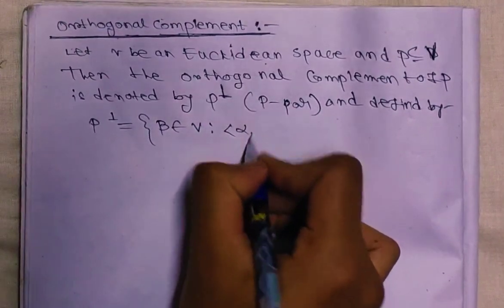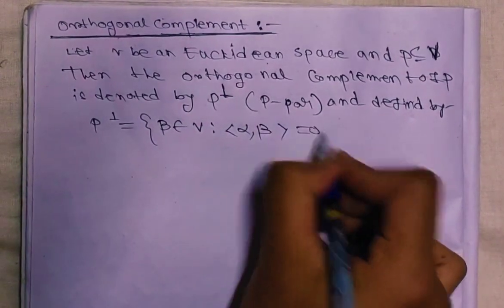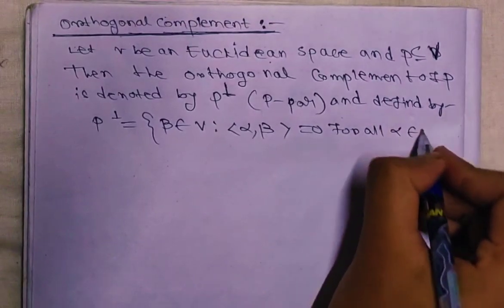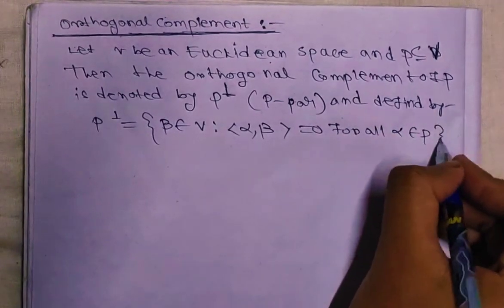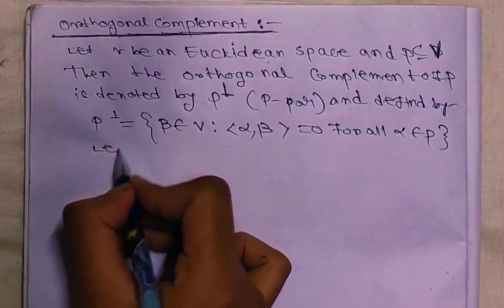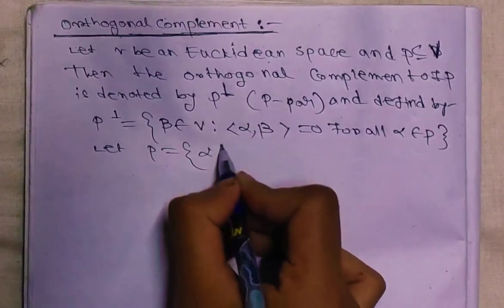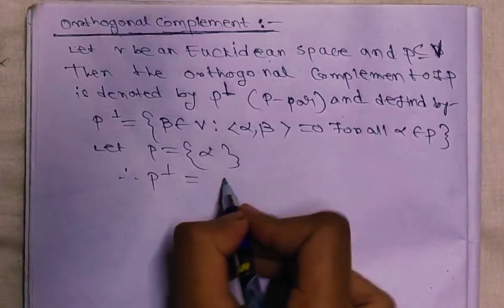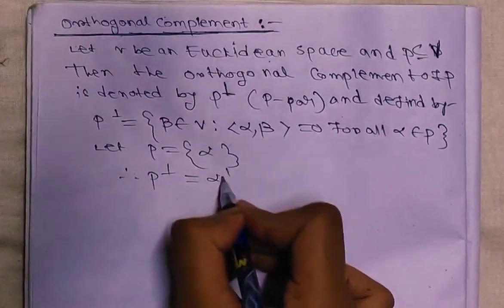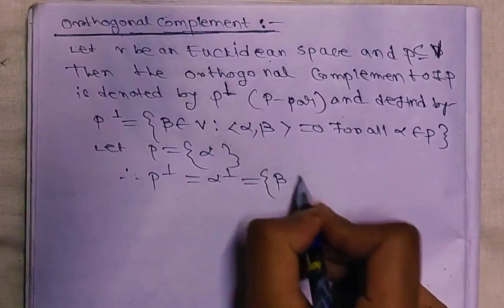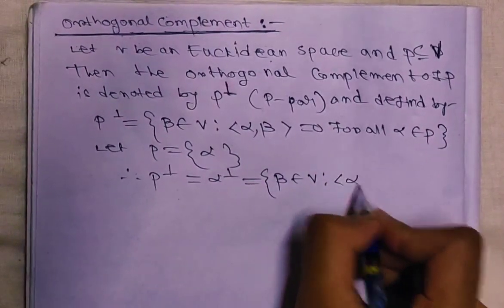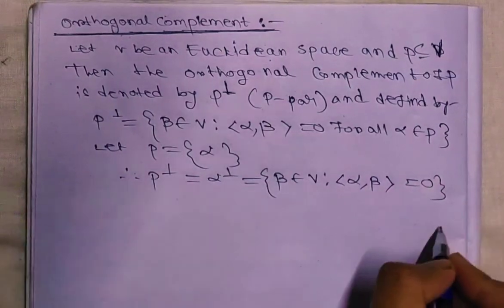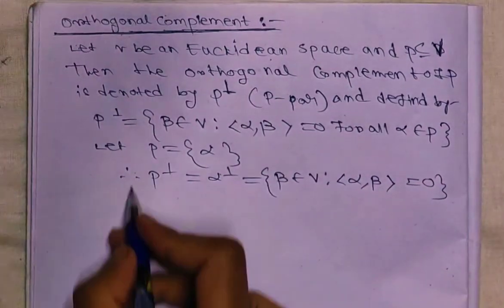P⊥ is defined as: P⊥ equals the set of beta belonging to V such that the inner product of alpha and beta equals zero for all alpha belonging to P. Let P equal to the singleton {α}; therefore P⊥ equals α⊥ equals the set of beta in V such that the inner product of alpha and beta equals zero.